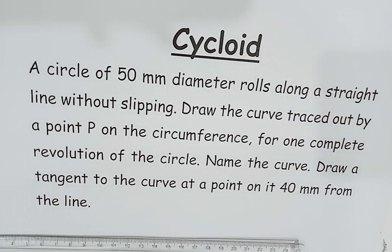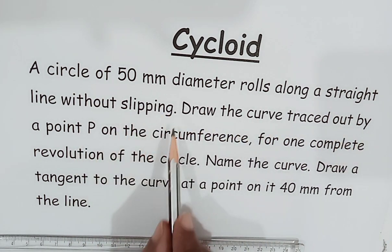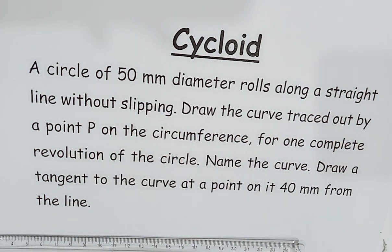Welcome to the discussion of cycloidal curves. Here is the given problem: a circle of 50 mm diameter rolls along a straight line without slipping. Draw the curve traced out by a point P on the circumference for one complete revolution, name the curve, and draw a tangent to the curve at a point 40 mm from the line.